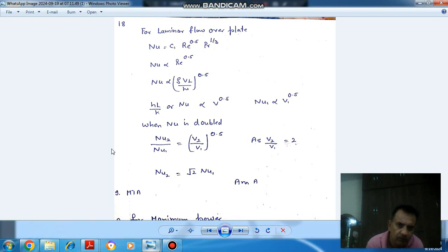So, for laminar flow over plate, the correlation is NU = C1 × Re^0.5 × Pr^(1/3), where Re is Reynolds number and Pr is Prandtl number. We can say that Nusselt number is proportional to Reynolds number raised to 0.5.